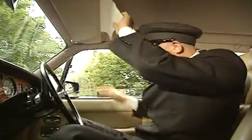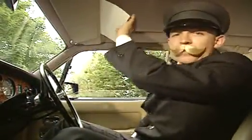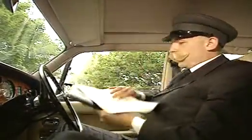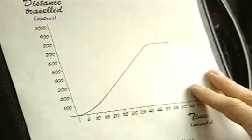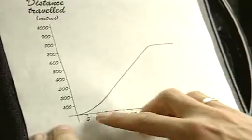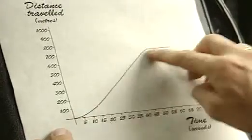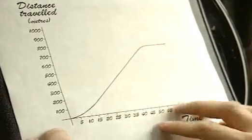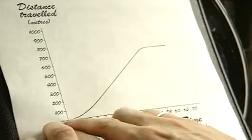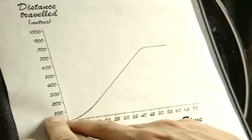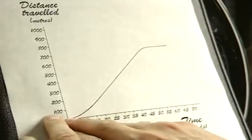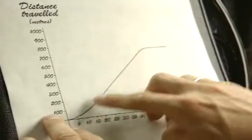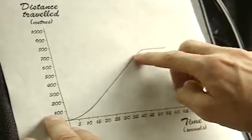The wonderful thing about making a graph of your journey is — here's my graph — that at any point along this curve, you can work out your speed. This is the point where I started off; there's nothing there. I gradually gained speed, and this straight line is my constant speed.